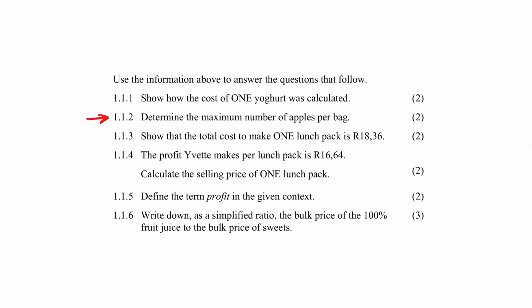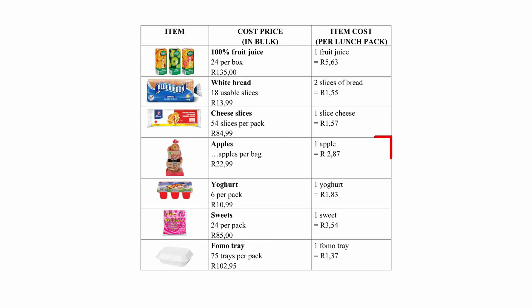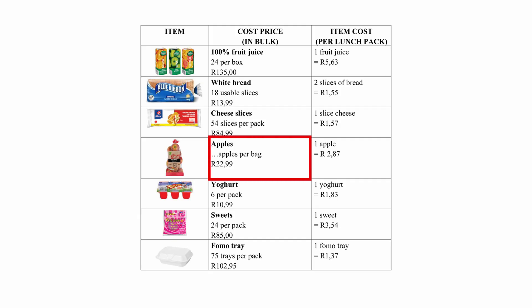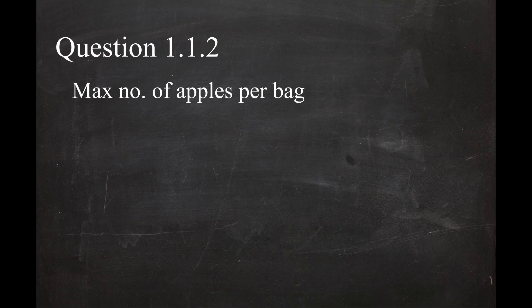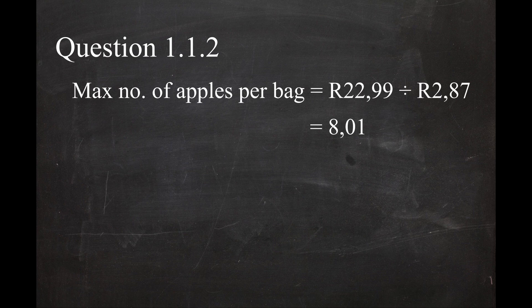In question 1.1.2, you have to determine the maximum number of apples per bag. Since one apple equals 2.87 and the bulk apples cost 22.99, the maximum number of apples per bag equals 22.99 divided by 2.87, and this equals 8.01. You can't get 0.01 of an apple, so you have to round this answer down to 8 apples.